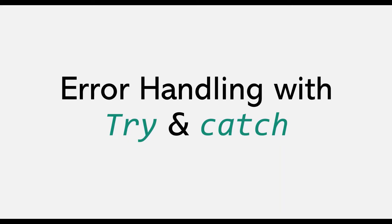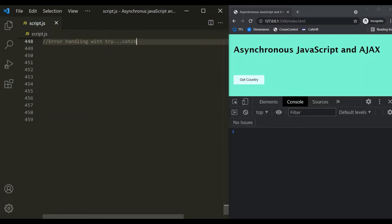Try and catch block is nothing new in JavaScript. It has been a part of the JavaScript language since the beginning. Try and catch has nothing to do with async and await specifically — we can use try and catch block even with regular JavaScript code. In previous lectures, we learned that unhandled errors or uncaught errors are not good for your program. Let's understand why.